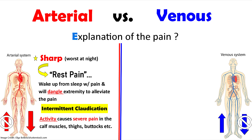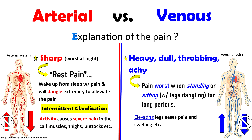With arterial, we're having an issue with blood going forward to that extremity. So whenever they're doing that activity, it's using up the oxygen and depriving that muscle of blood flow, so it starts to hurt. But when they rest, the blood starts to go back to the muscle and the pain goes away. With venous disease, patients are going to describe the pain as being heavy, dull, throbbing, and aching. The pain will be worse when they're standing or sitting with legs dangled for long periods, because the blood flow is not traveling back to the heart, and being in that position does not allow that to happen. When they elevate the legs, that eases the pain and the swelling.